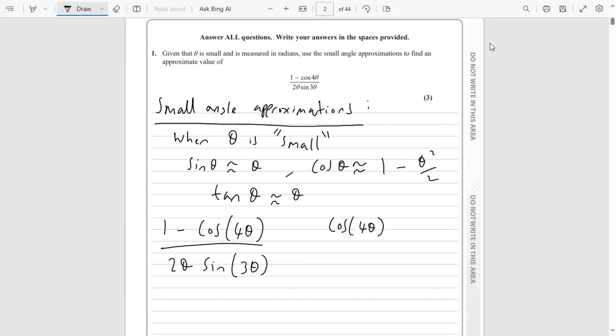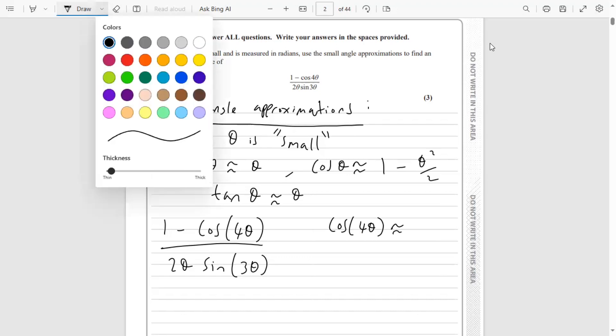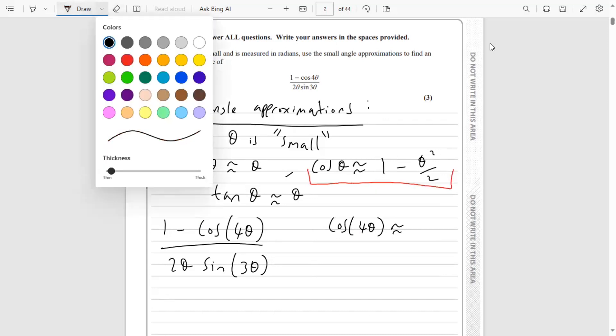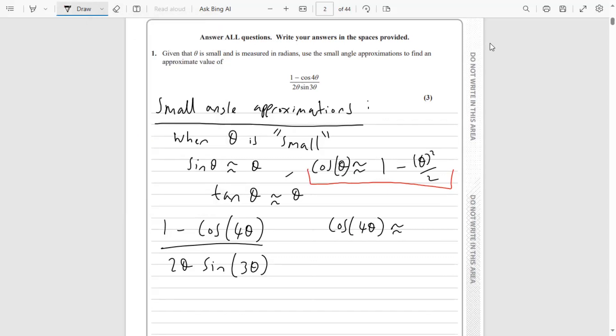If theta is a small angle, then 4θ is also a small angle. So we look at the cos θ formula for the small angle approximation and instead of plugging in θ, we plug in 4θ this time. We get 1 - (4θ)²/2, so we square the entire 4θ angle and divide by 2.